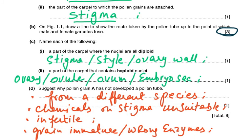Name a part of the carpel where nuclei are all diploid: stigma, style, or ovary wall — all are diploid in the parent plant. A part containing a haploid nucleus: the ovule, ovum, or embryo sac. Then: suggest why pollen grain A has not developed a pollen tube. It could be from another species, or the chemicals on the stigma are unsuitable, or the pollen grain is immature and has the wrong enzymes.